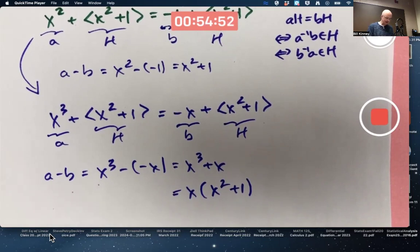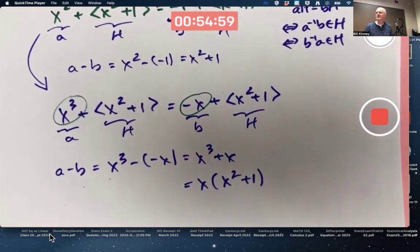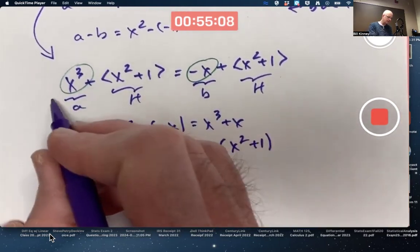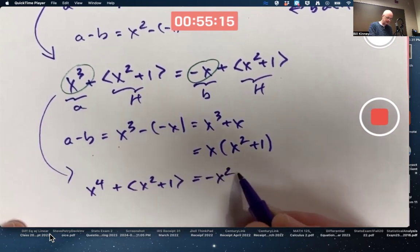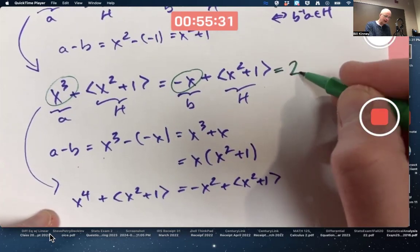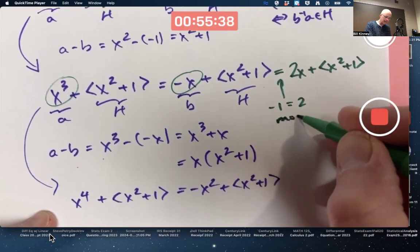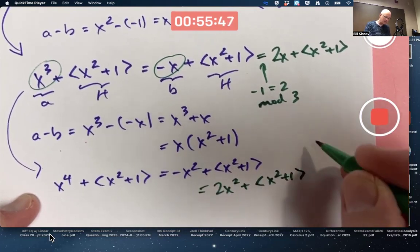So in other words, I can always simplify x cubed to negative x, effectively, when doing calculations in this factor ring. Likewise, you could also simplify, if you multiply both sides by x to the fourth, x to the fourth plus the ideal to negative x squared plus the ideal. And by the way, I also could simplify these in other ways, using the fact that the coefficients are in Z₃. I could also rewrite this one as 2x plus the ideal, because negative 1 equals 2 mod 3. Likewise, I could simplify this one to 2x squared plus the ideal, once again, because negative 1 equals 2 mod 3.